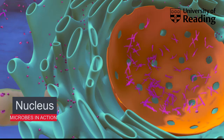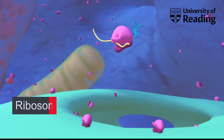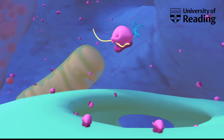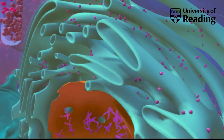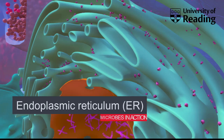In eukaryotes, transcription — the production of mRNAs — therefore takes place in the nucleus. The mRNAs have to be transported through pores in the nuclear envelope before they can be translated into proteins by ribosomes, which are located in the cytoplasm and also embedded in another membrane-bound organelle called the endoplasmic reticulum, or ER, which is formed from extensions of the nuclear envelope called cisternae.